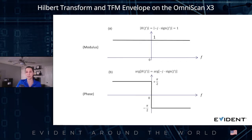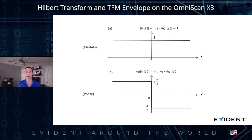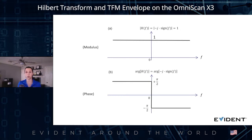Without going too deep into math, when the Hilbert Transform is applied, it is as though the operator has shifted the original signal in phase by pi divided by two radians. As we are showing here, the behavior of the Hilbert Transform in the frequency domain keeps the signal amplitude unchanged — shown on top — and shifts its phase by pi divided by two radians — shown on the bottom.